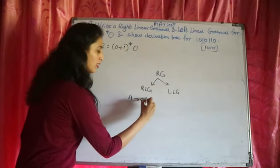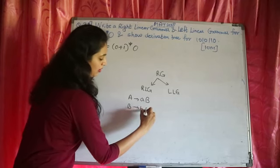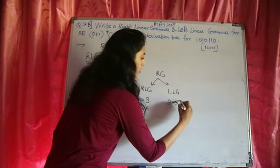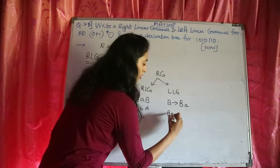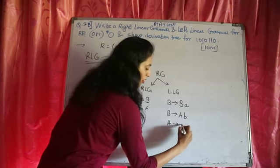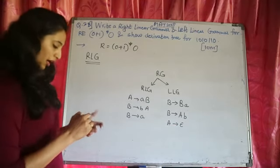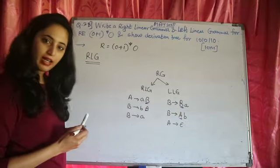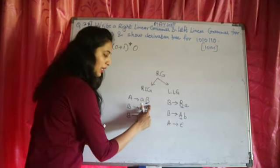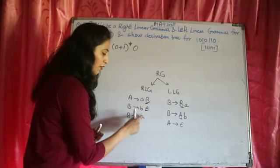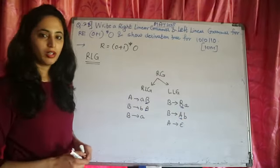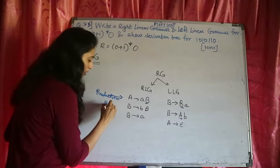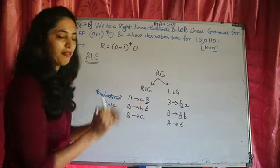Right linear grammar has all the rules where the capital letters come on the right side. Left linear grammar has rules where the capital letters come on the left side. We can have a maximum of one capital letter and a minimum of zero capital letters, and we will have one small letter in each of the production rules. This is what we call a production rule.